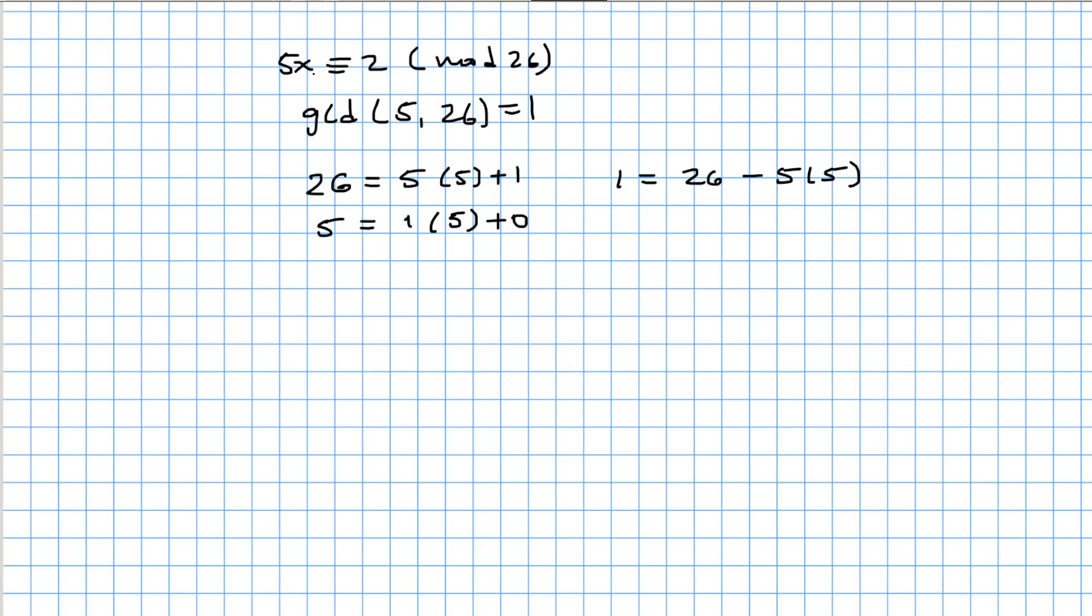And here, 5 goes with x. So 5 goes with negative 5, because if I rewrite this as 26 plus 5 times negative 5, we have to multiply 5 by negative 5 to get 1 here.